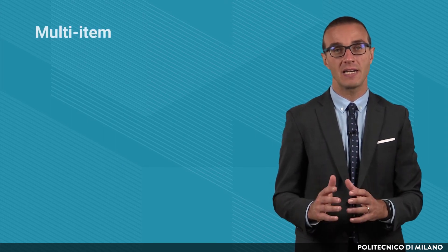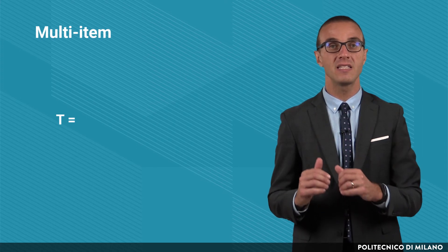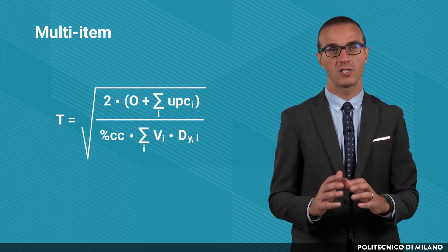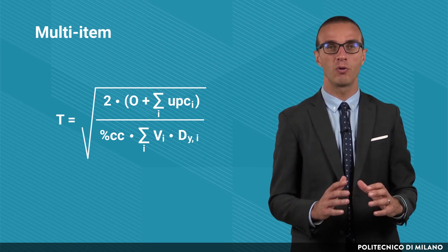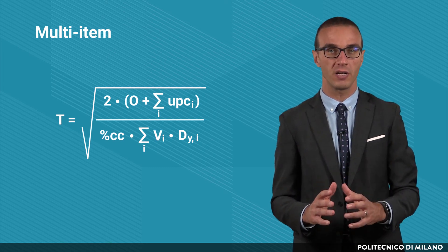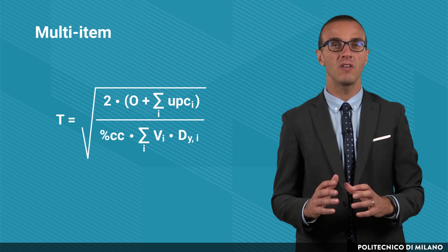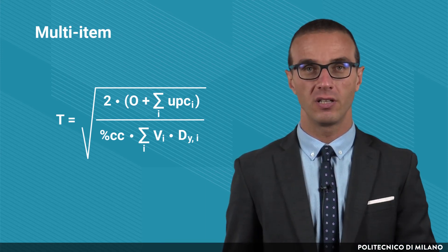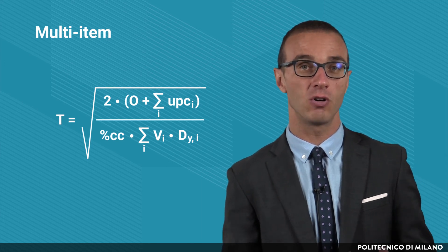Considering instead the multi-item case, the formula to find the optimal order interval is the same as the previous case, but with some differences. First, the yearly procurement cost is composed by a fixed part corresponding to the common cost for procuring an order, and a variable one, which is the sum of unitary procurement costs of the different items. Second, the overall cost of goods is computed as the sum of the single item costs.